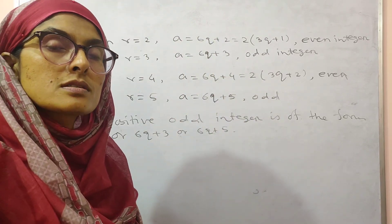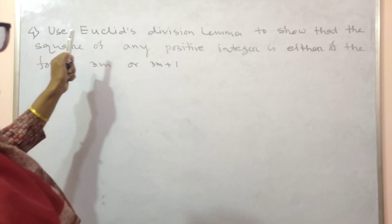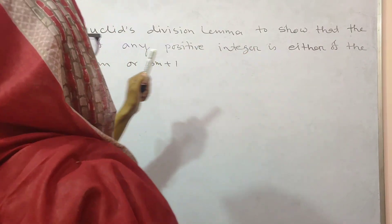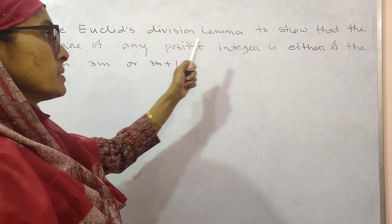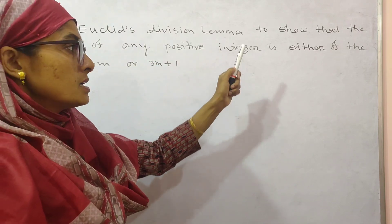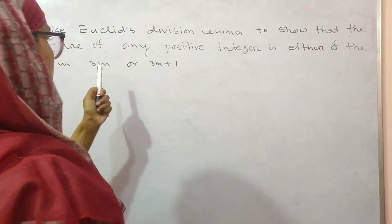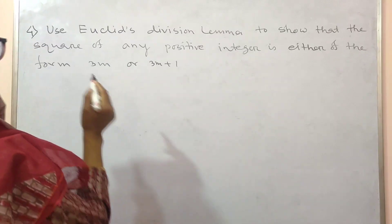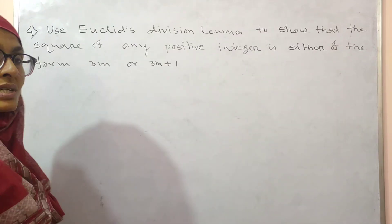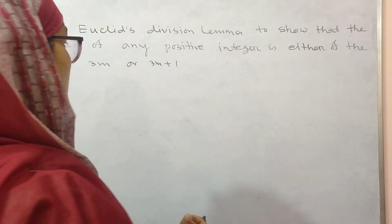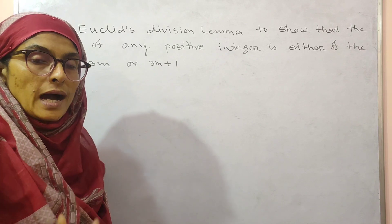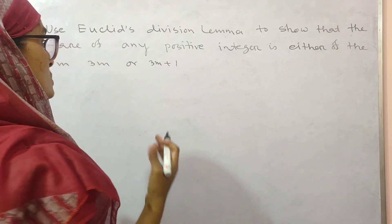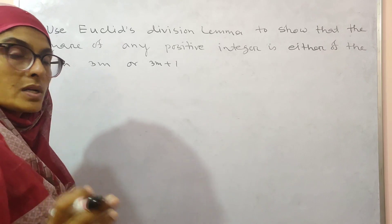You can write the notes. Number 4: use Euclid's division lemma to show that the square of any positive integer is either of the form 3m or 3m plus 1. So, you have to use Euclid's division lemma as in question number 2. I will discuss question number 3 later. This is the same approach as question number 2.